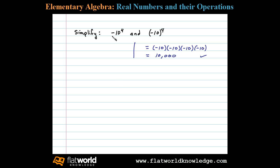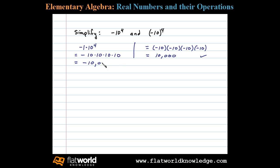Now let's compare that with negative 10 to the fourth. One way to think of that is negative 1 times 10 to the fourth. In either case, 10 is the base, not negative 10. So we write 10 as a factor four times — here we really only have one negative. Negative 1 times 10,000 is just negative 10,000.